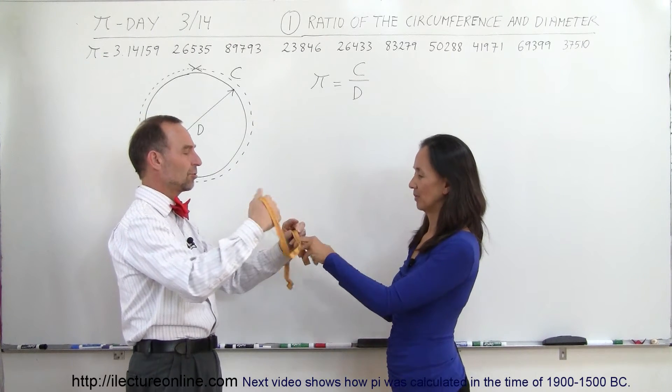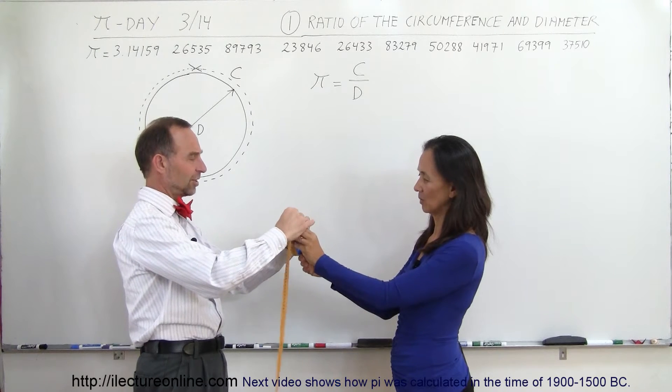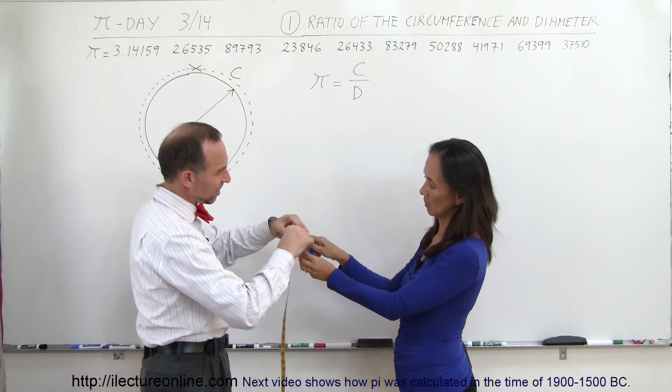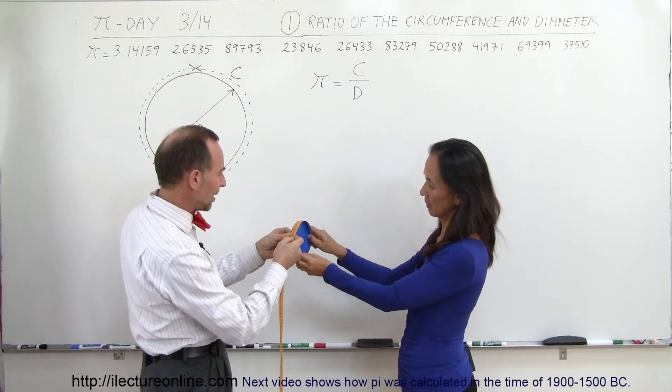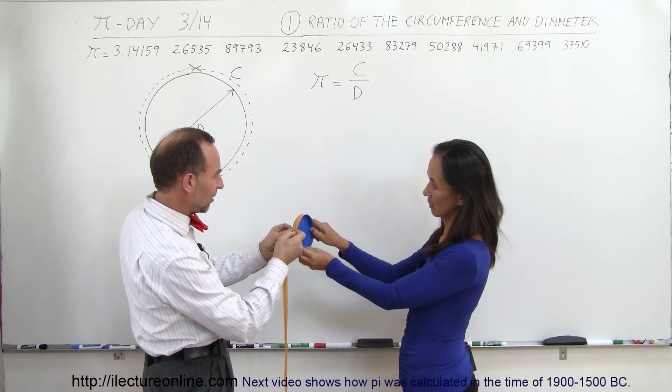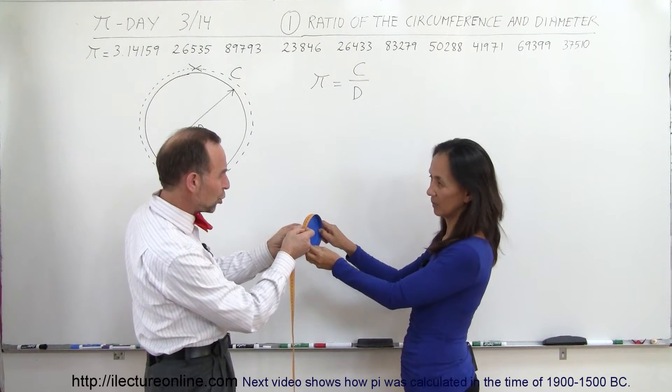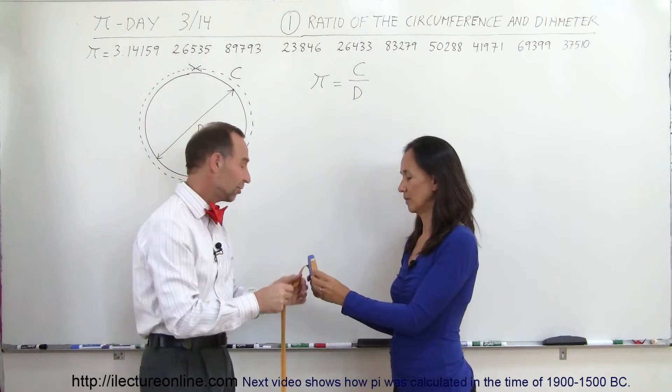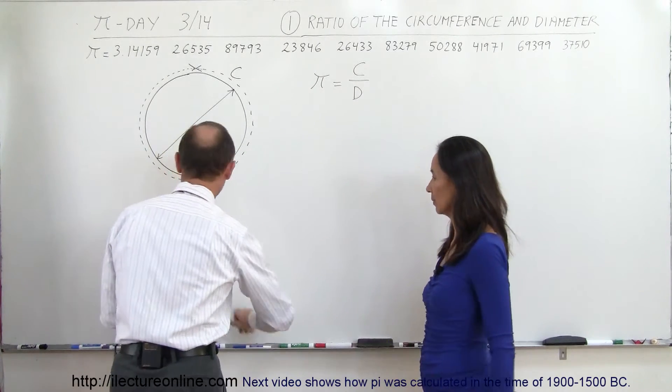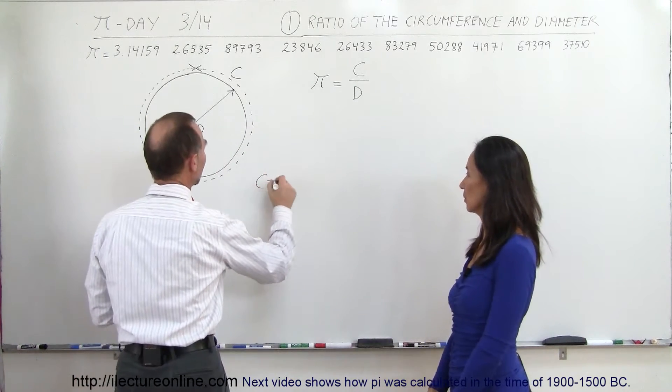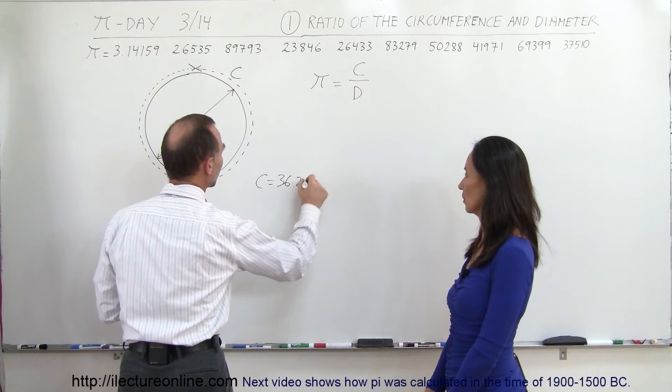We need to find the diameter of this lid. It happens to be the lid of a mayonnaise jar, by the way. We're going to start out with the circumference. It looks like it's about 36.2 centimeters. So C equals 36.2 centimeters.